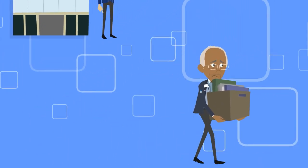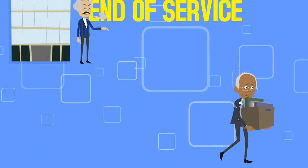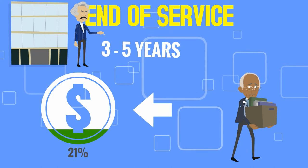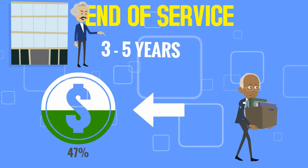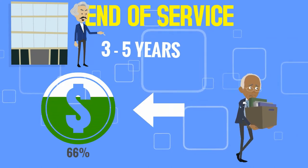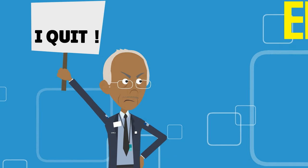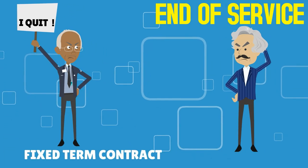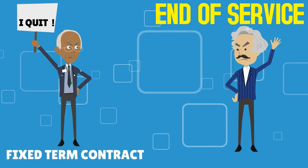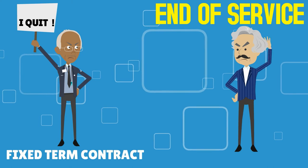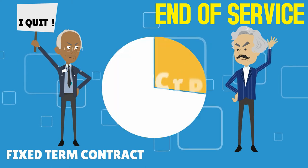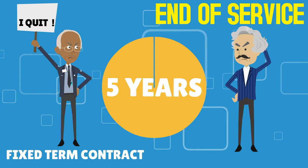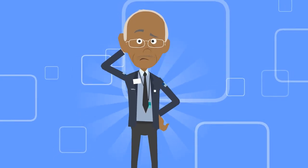An employee who resigned after spending three to five years at work gets only sixty-six percent of his end-of-service amount. The situation is different for an employee who decides to terminate a temporary contract, as he does not get his end-of-service gratuity unless he spent more than five years at work.